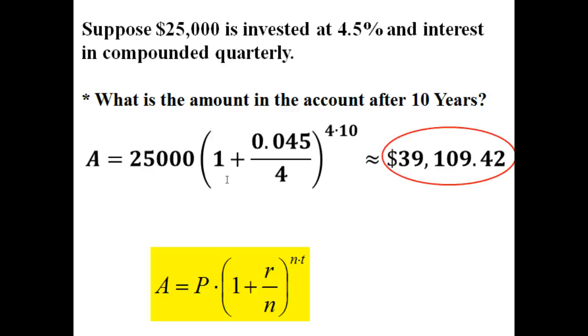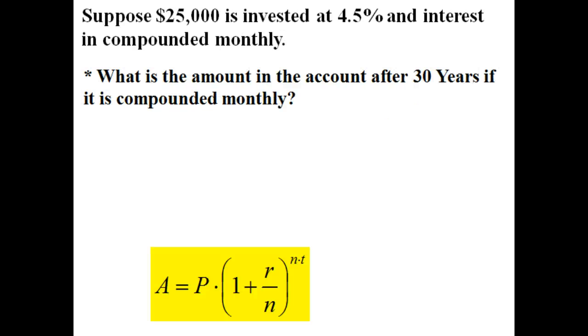This one we're using basically some similar numbers, but we've changed a couple things. We've got $25,000 still on initial investment, still 4.5%. This time though, it's going to be compounded monthly, in other words 12 times a year. And then we're looking for the amount after 30 years instead of 10 years. So we're still going to use our same formula.